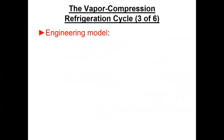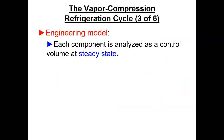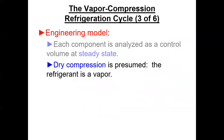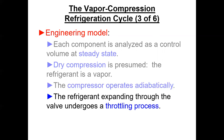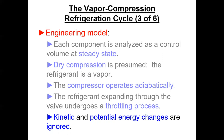The engineering model assumes each component is analyzed as a control volume at steady state — nothing changes with time. Dry compression is assumed, meaning the refrigerant is all vapor as it goes through compression with no liquid droplets on the suction side. The compressor operates adiabatically with no significant heat transfer. The refrigerant expanding through the valve undergoes a throttling process, which is constant enthalpy. Kinetic and potential energy changes are ignored throughout the cycle.